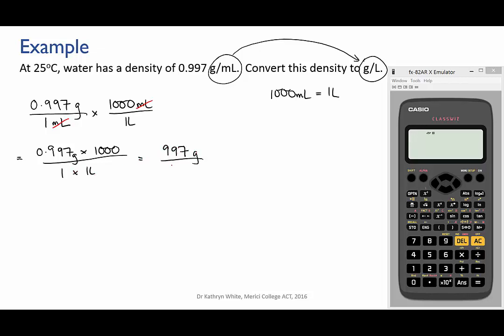Which if you think about it makes sense. If one milliliter has a mass of 0.997 then 1,000 milliliters, that's a liter, must have a mass of 1,000 times that, which is 997. It's always good to do a little common sense check of your calculations when you've done a conversion.